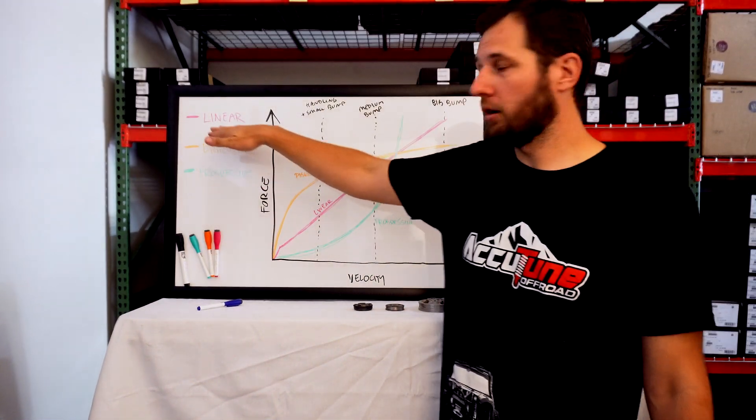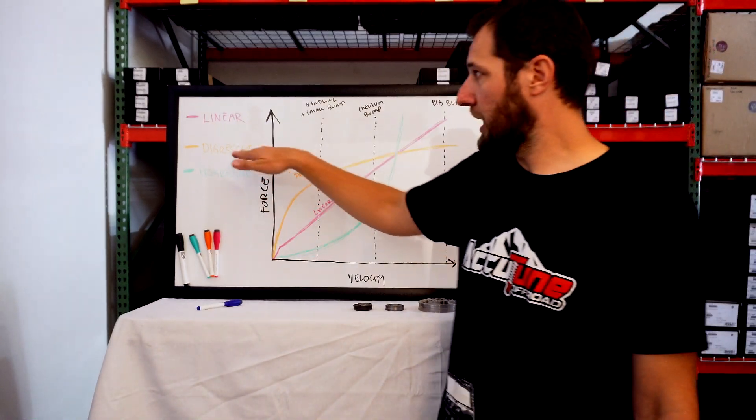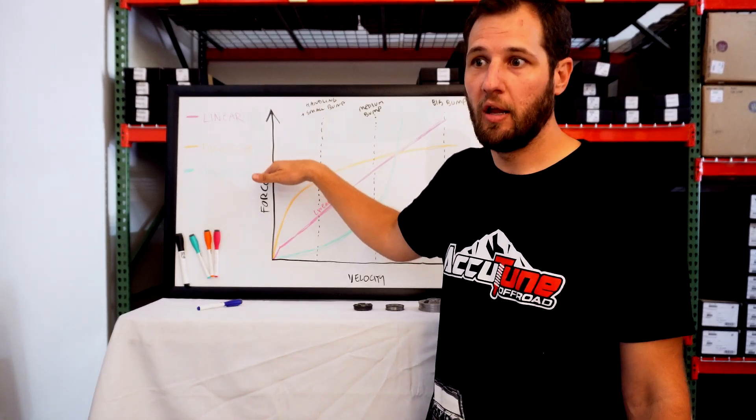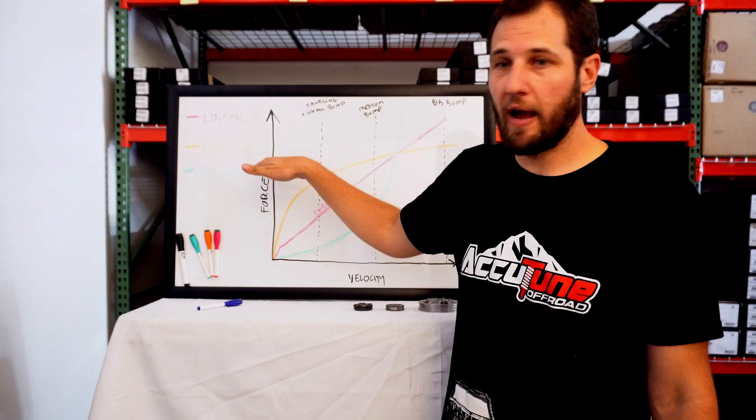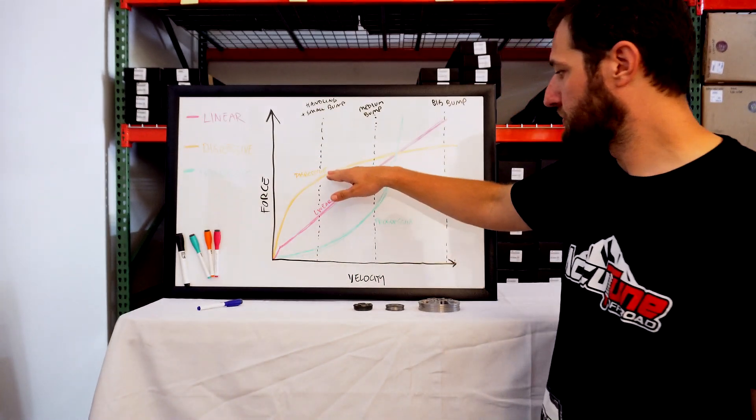The next most common is going to be digressive. You see that a lot in Bilstein shocks, Icon, and then some private brand manufacturers use digressive as well. So digressive gives you a lot more low speed load compared to linear, and then it sort of blows off as you go faster.